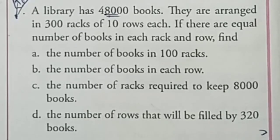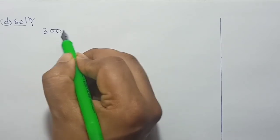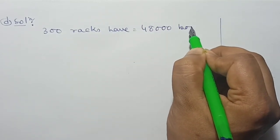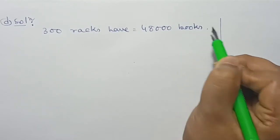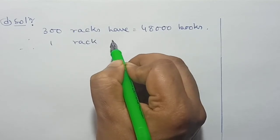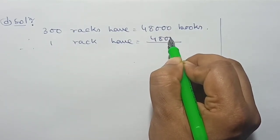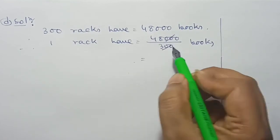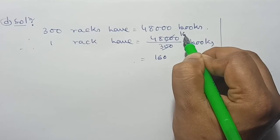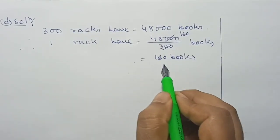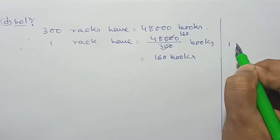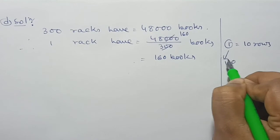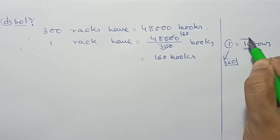Question D: the number of rows that will be filled by 320 books. Solution: 300 racks have 48,000 books. Therefore, 1 rack has 48,000 divided by 300 books. Cancelling, 1 rack has 160 books. We know 1 rack equals 10 rows, and 1 rack has 160 books.